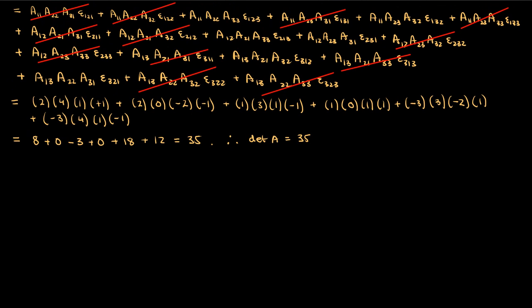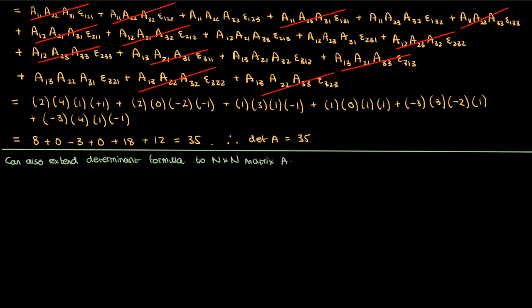You can verify this on Wolfram Alpha if you don't believe me. Anyway, that's one somewhat cumbersome application of the Levi-Civita symbol. A quick note is that we can actually extend this determinant formula with the Levi-Civita symbol to the n by n matrix where n is any natural number. The caveat to extending the Levi-Civita symbol to calculate n by n matrix determinants is that we have to use a higher order version of that symbol.